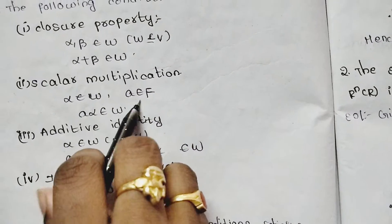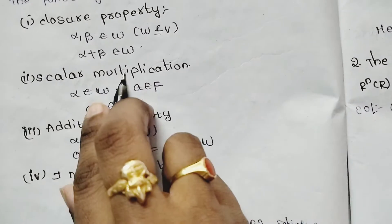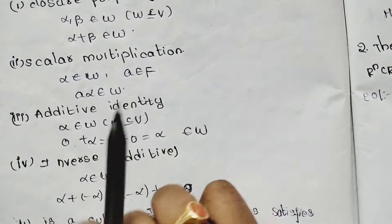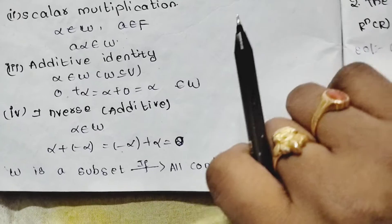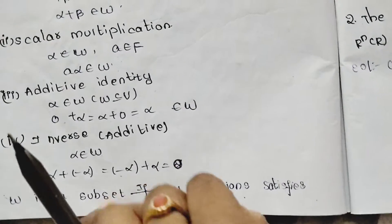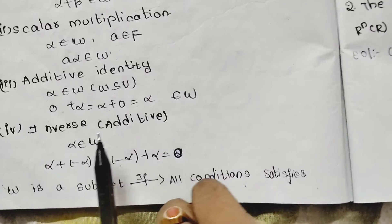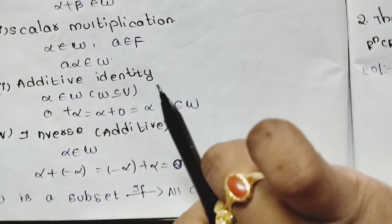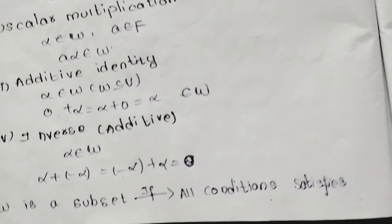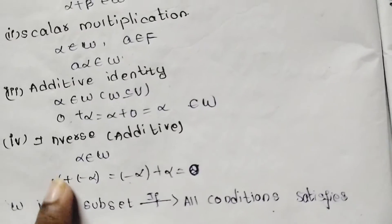If we multiply both, the scalar multiplied by vector gives a vector. So scalar multiplication: A times alpha should belong to omega. Additive identity: 0 plus alpha equals alpha plus 0 equals alpha. And inverse identity: alpha plus (minus alpha) equals minus alpha plus alpha equals 0.